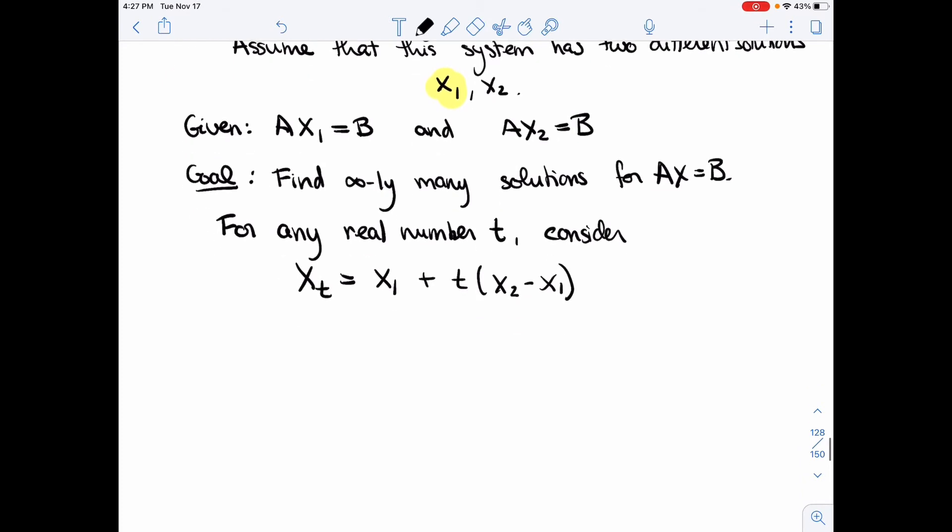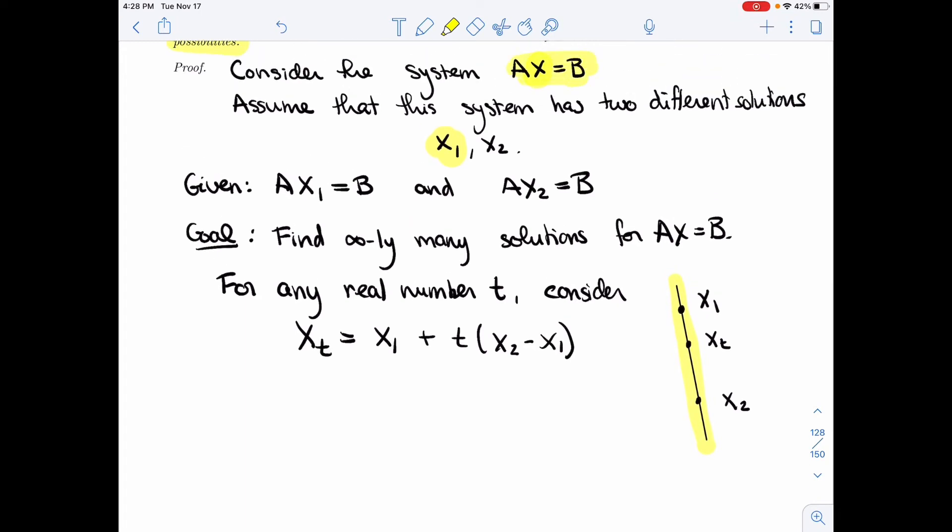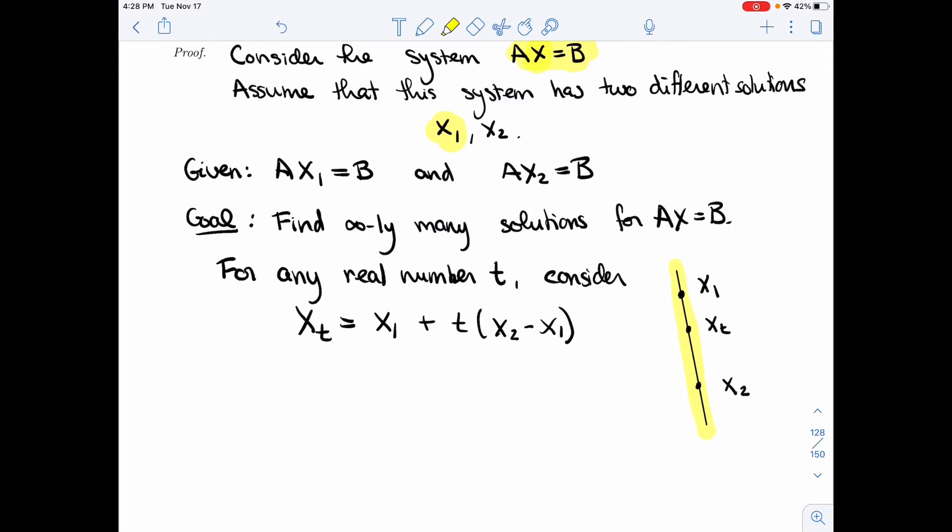How did I come up with this? It looks complicated, but geometrically, remember in Chapter 3 we often plotted solutions and thought of them as lines and planes. If I have x1 and x2 here, then xt represents all points on this line. What I want to prove is that this entire line fits our equation Ax = B. This is a random point on the line from x1 to x2.